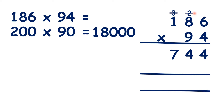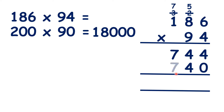Now we can cross out our working and write a 0 in our units column. 6 times 9 is 54. 8 times 9 is 72, plus 5 is 77. And 1 times 9 is 9, plus 7 is 16.